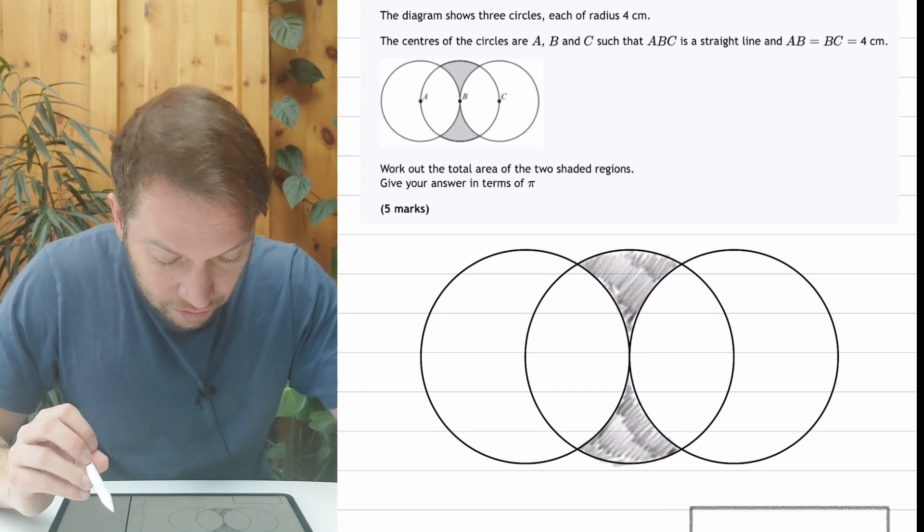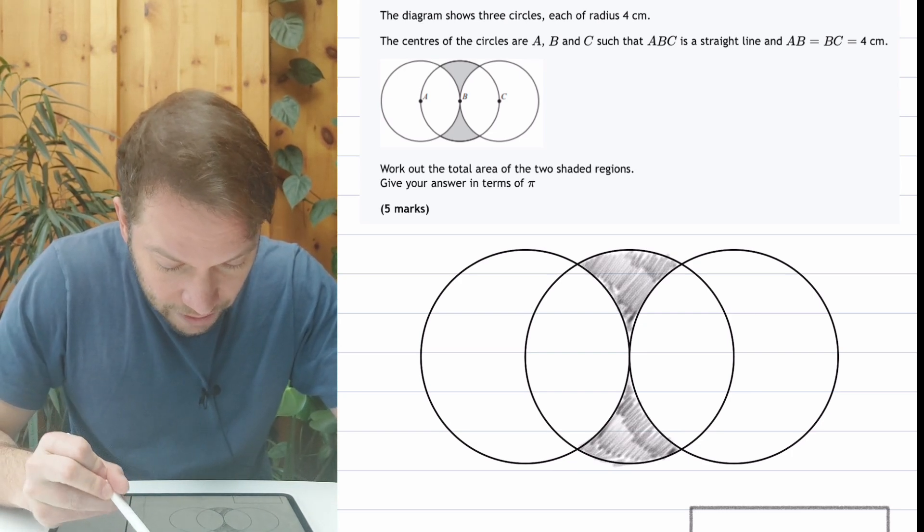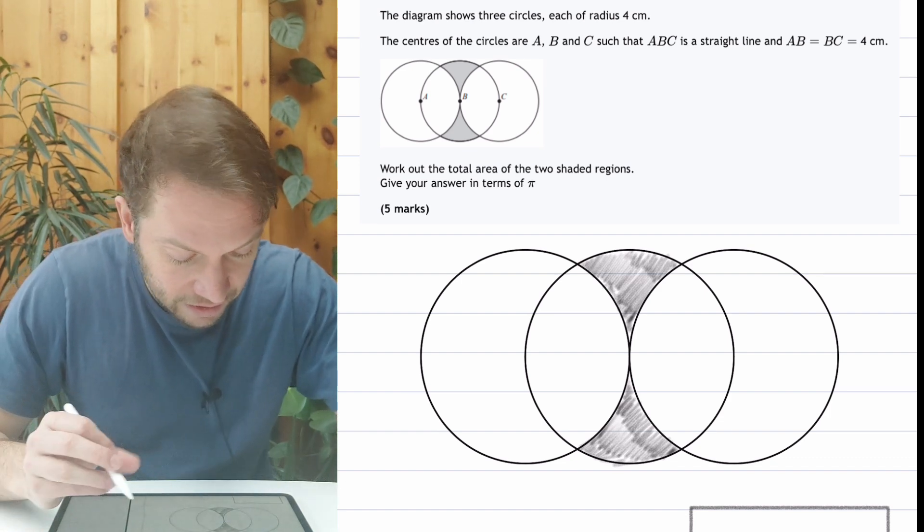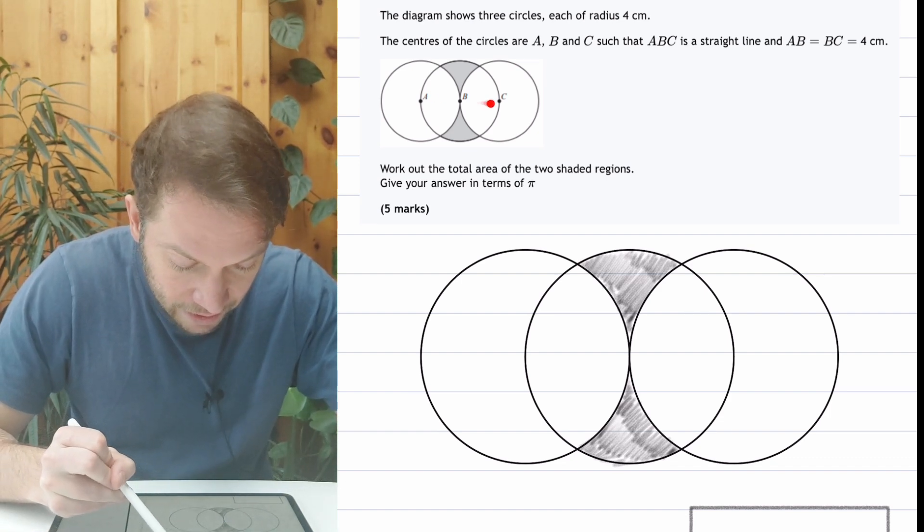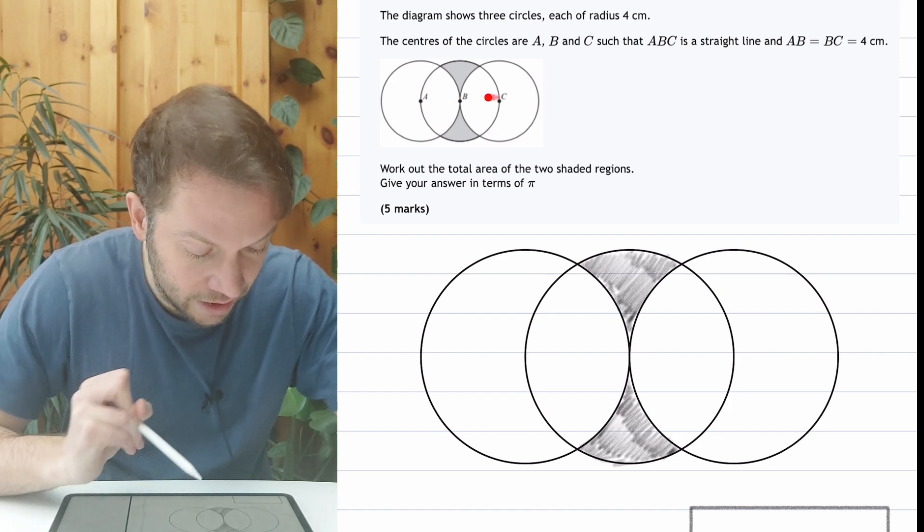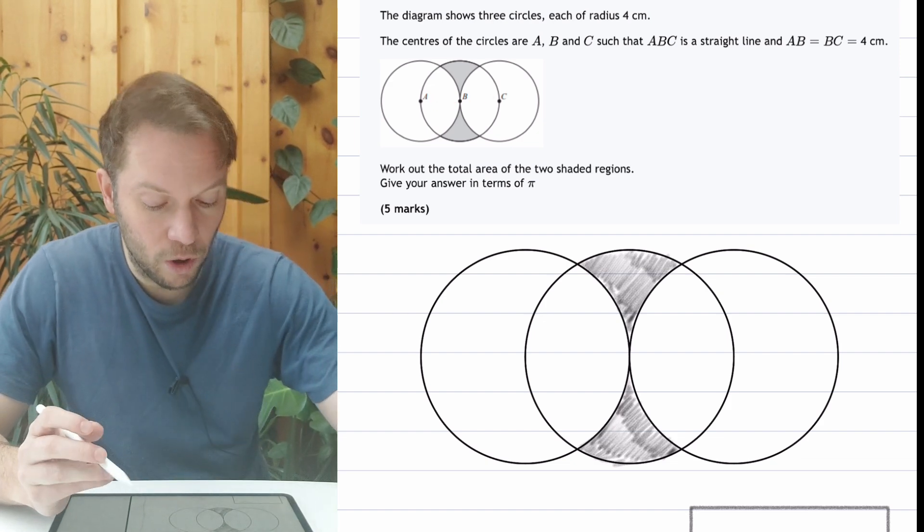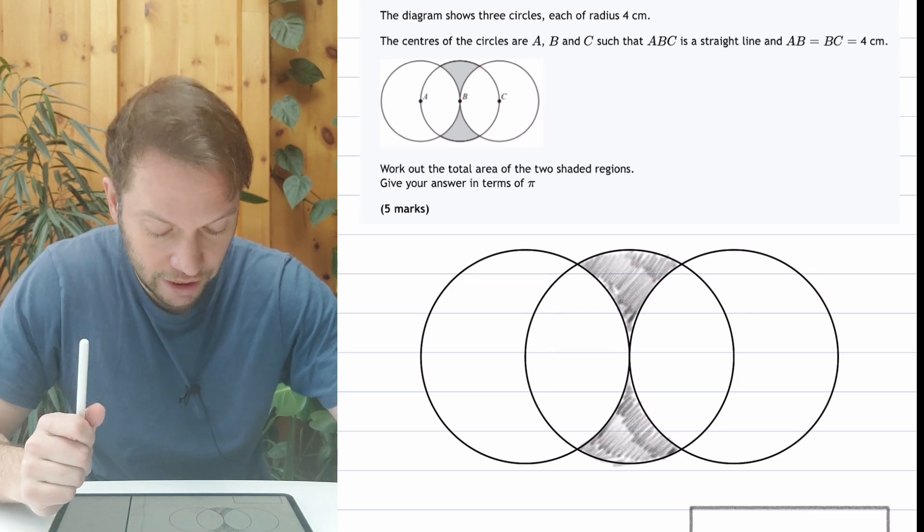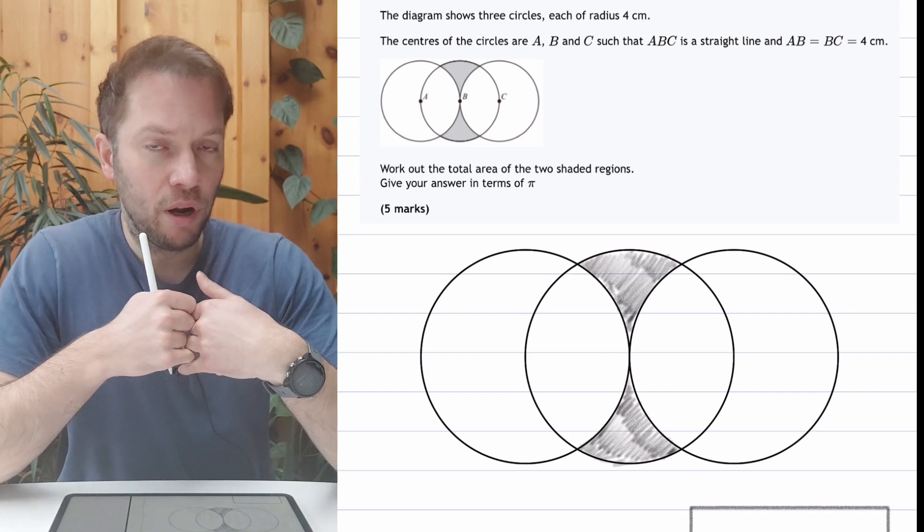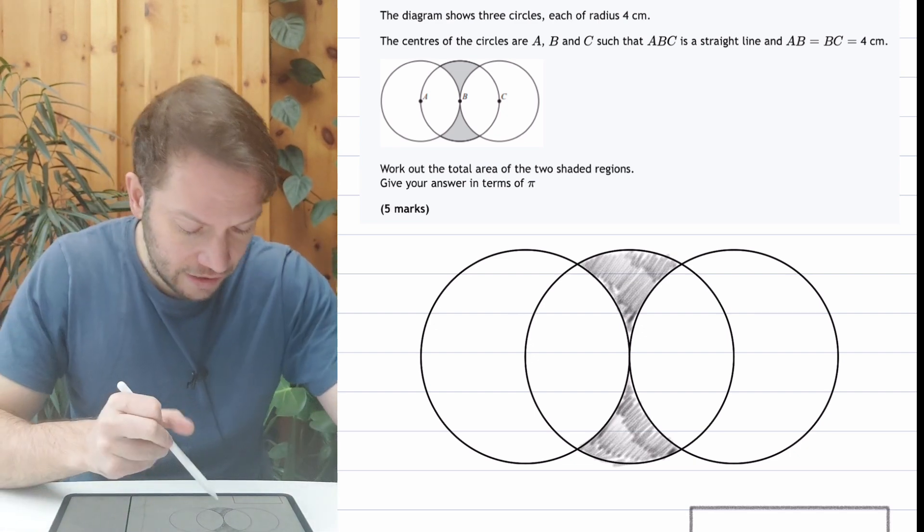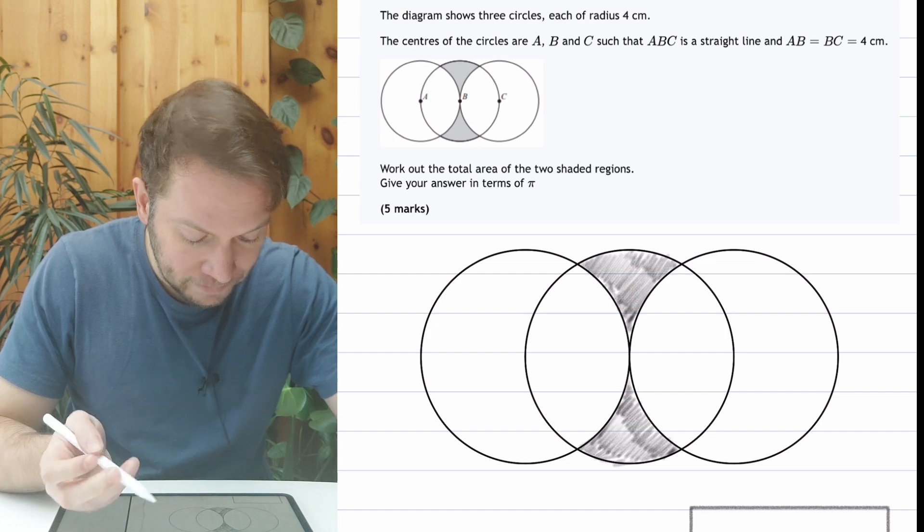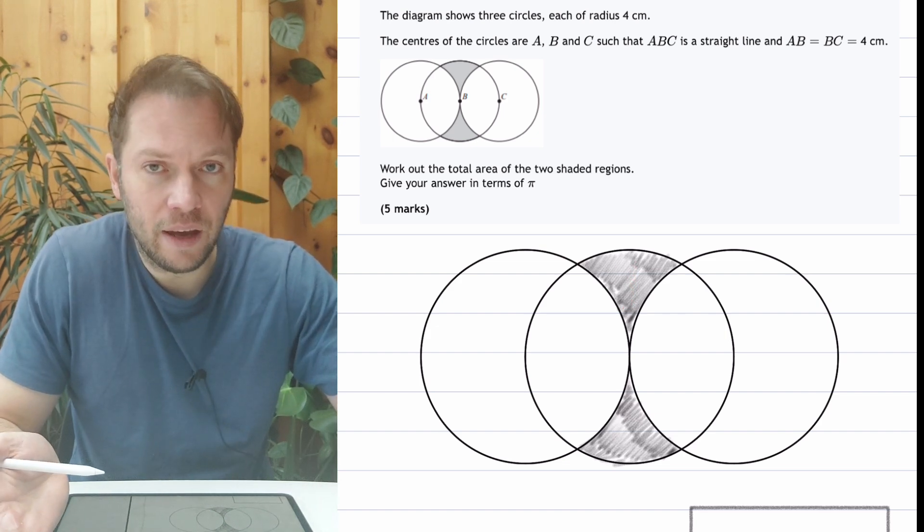The diagram shows three circles, each of radius 4 cm. The centres of the circles are A, B and C such that ABC is a straight line, and AB equals BC equals 4 centimetres. Work out the total area of the two shaded regions. Give your answer in terms of π. What I think makes this a particularly difficult problem is it's hard to know where to start. This is a particularly complex region we're finding the area of, and you might not have found an area like that before.